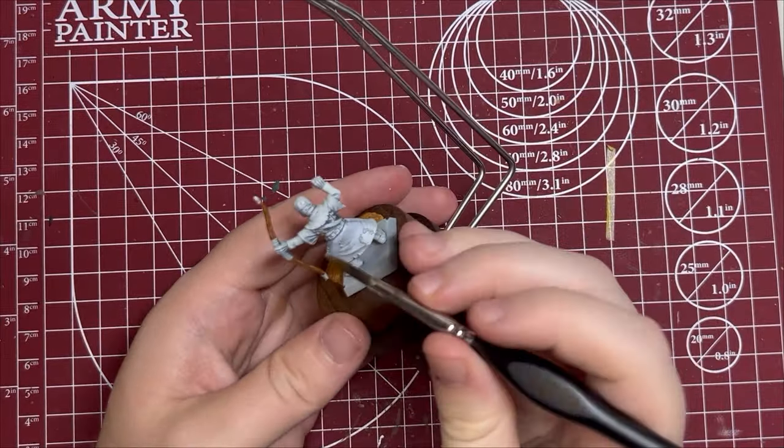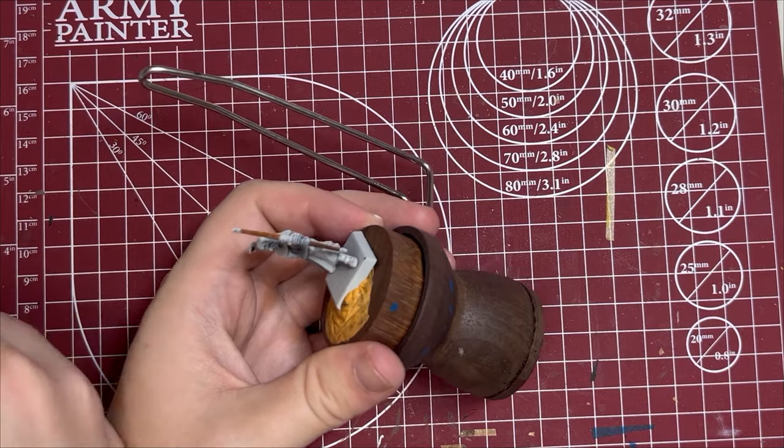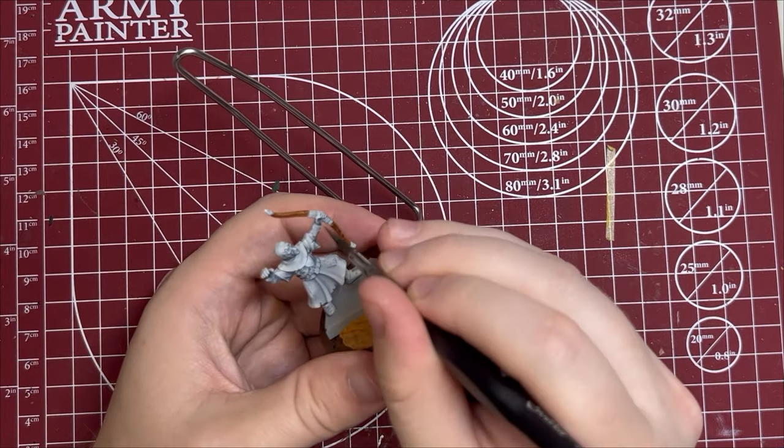Next I'm just going to work on his handle here. I'm just going to do some Apothecary White just to keep this as like a white cloth thing.